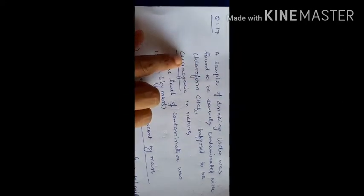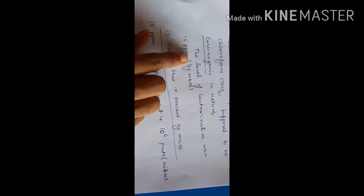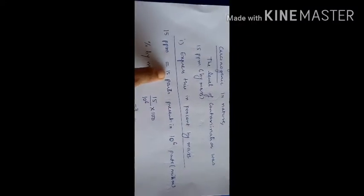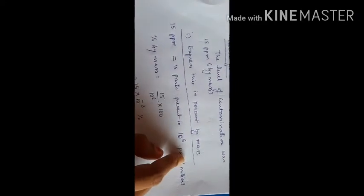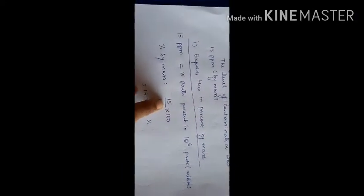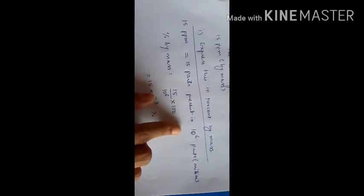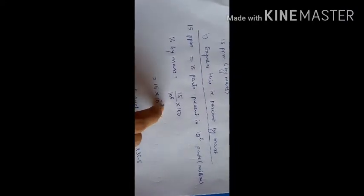Question 17: Drinking water is contaminated with chloroform (CHCl₃), which is carcinogenic, meaning it causes cancer. The level of contamination is 15 parts per million (ppm) by mass. We have to express this in percentage by mass. Since ppm means 15 parts in 10⁶ parts, percentage by mass = (15 / 10⁶) × 100 = 15 × 10⁻³ percent.